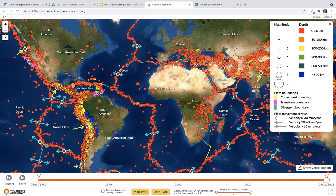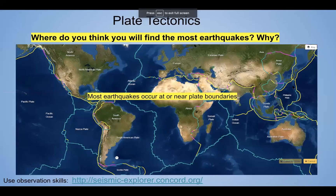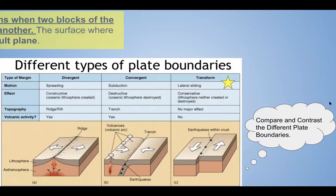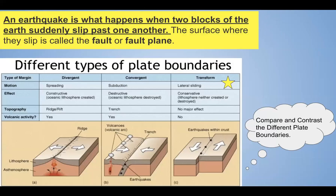Most earthquakes occur along plate boundaries, though not all of them do — you can see a few that happen away from plate boundaries on the map. Going back to the presentation: most earthquakes will occur at or near plate boundaries. An earthquake is what happens when two blocks of Earth suddenly slip past one another. The surface where they slip is called the fault or fault plane. Now let's take a look at this infographic showing different types of plate boundaries.